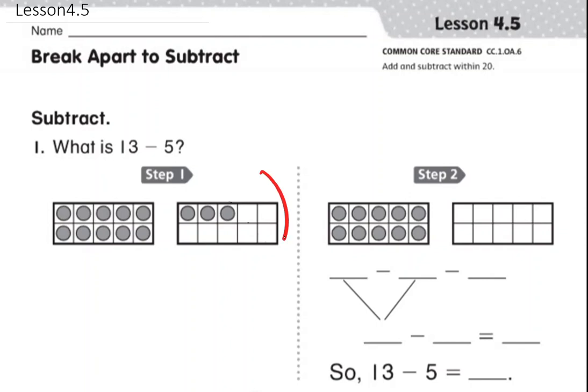We need two 10 frames to make 13. We have 10 here and then 3 on the right. So the first step is to make a 10. We take away 3 and now we are left...